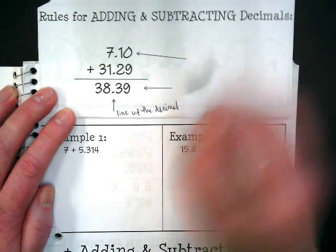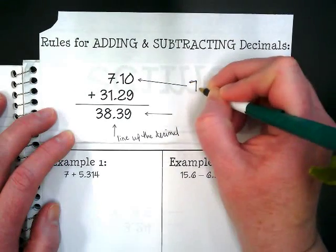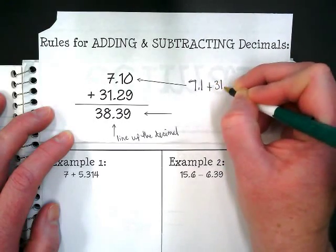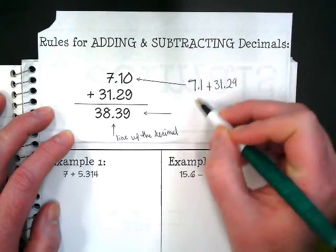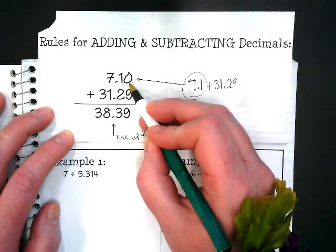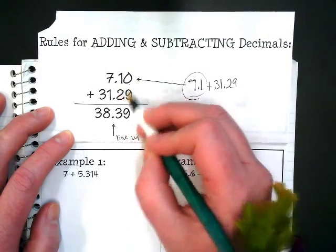This arrow here is pointing to show that this might have looked like 7.1 plus 31.29. But when we put this number up here, we're going to add a zero in the place for the hundredths so that this lines up nice and clean.